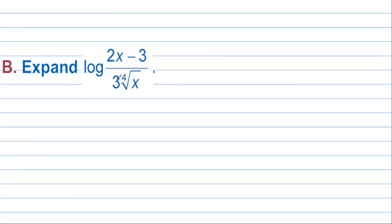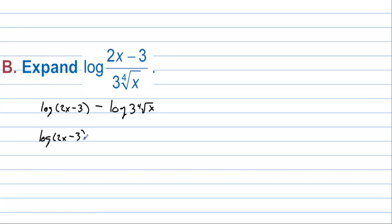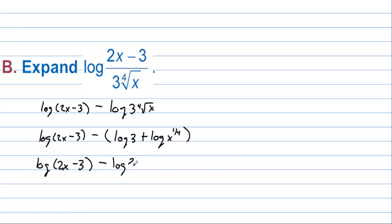Expand log of (2x − 3) over (3 times the 4th root of x). First we split over subtraction: log(2x − 3) minus log(3 · x^(1/4)). Note: you cannot distribute the log through the subtraction in (2x − 3). Then we separate the denominator factors: log(2x − 3) minus log 3 minus log(x^(1/4)). Bringing the one-fourth down in front and distributing the negative gives log(2x − 3) minus log 3 minus one-fourth log x.